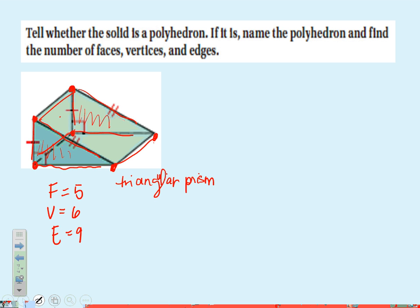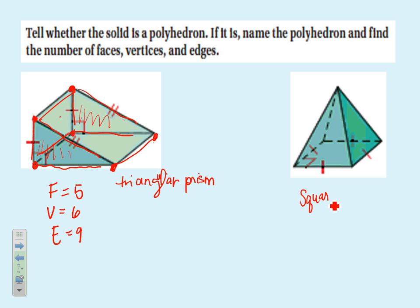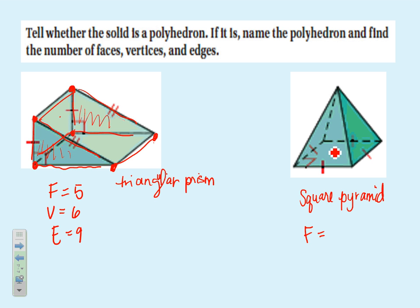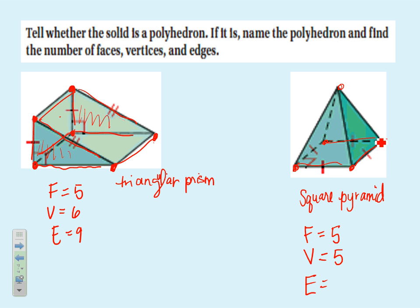The next one is a square pyramid. It is a polyhedron because it has no curves. It has five faces: one square base plus four triangular faces around the outside. Counting vertices gives five, and counting edges gives eight. So: F = 5, V = 5, E = 8.